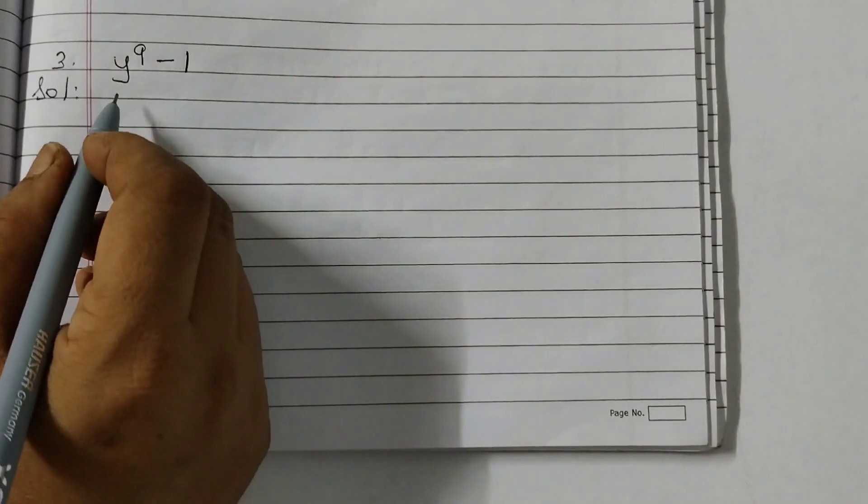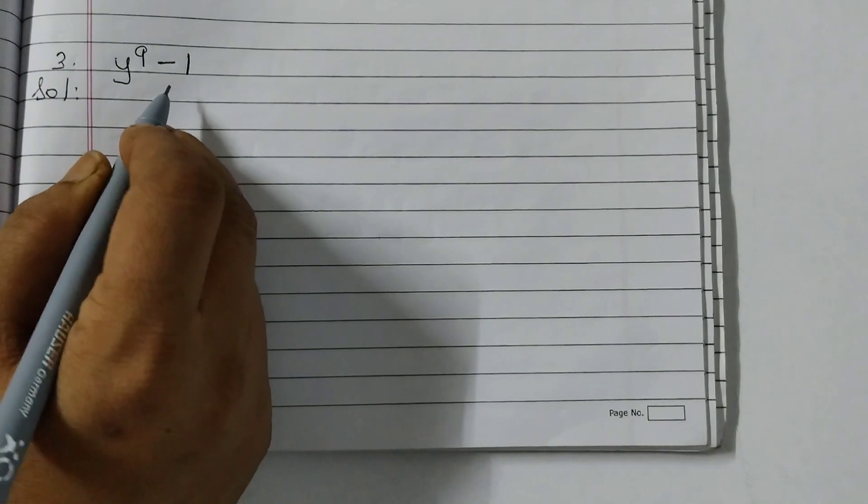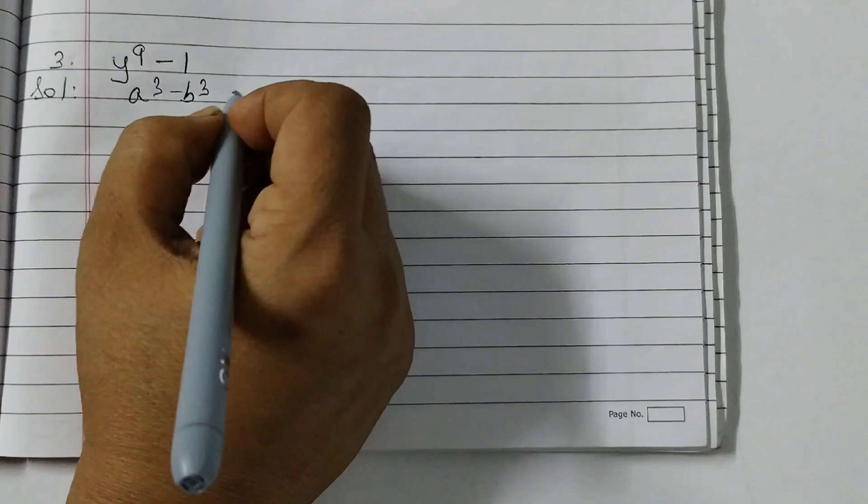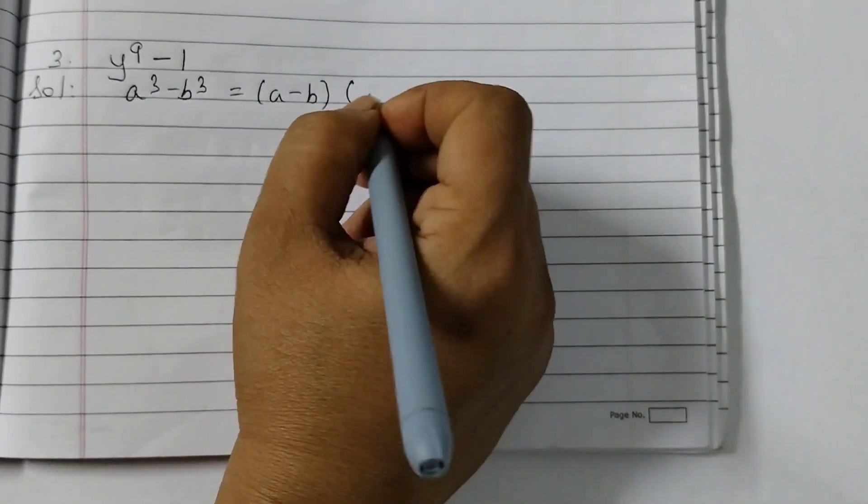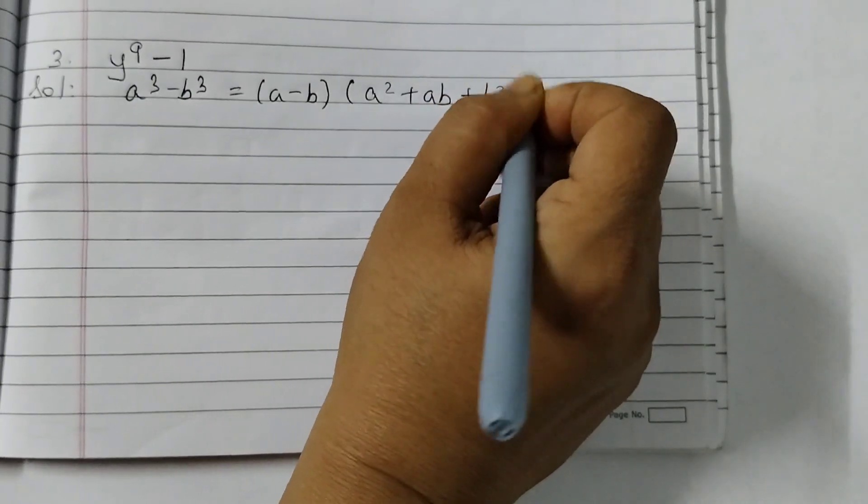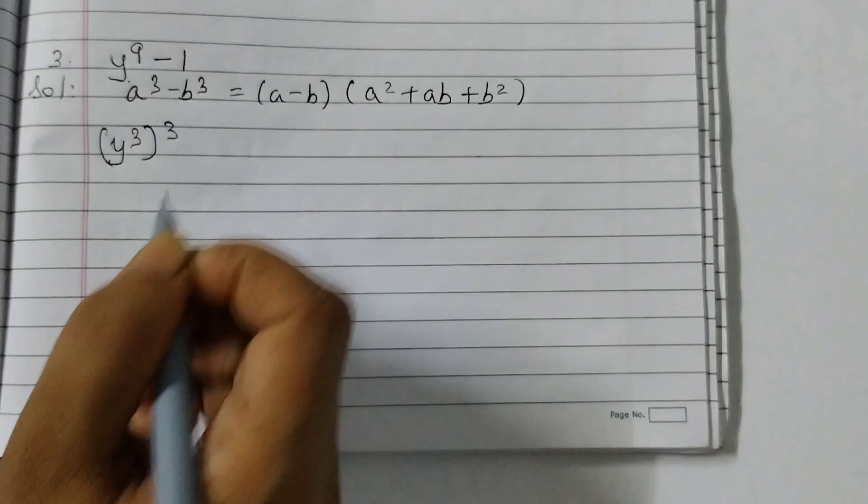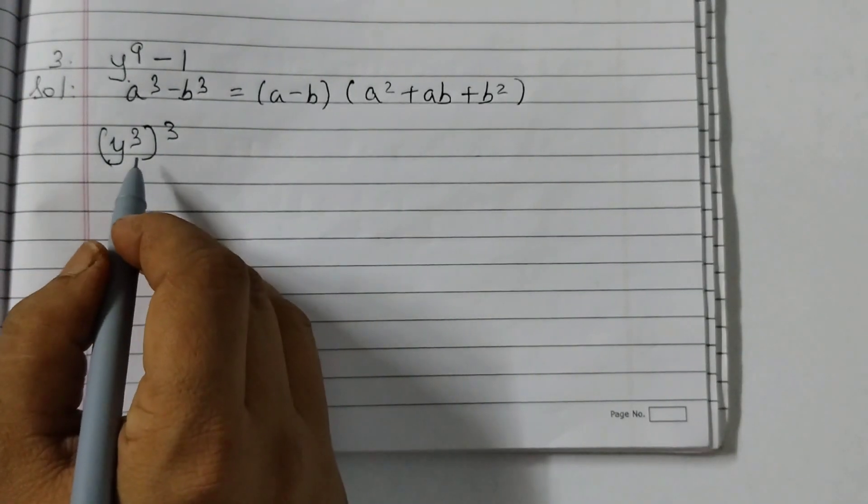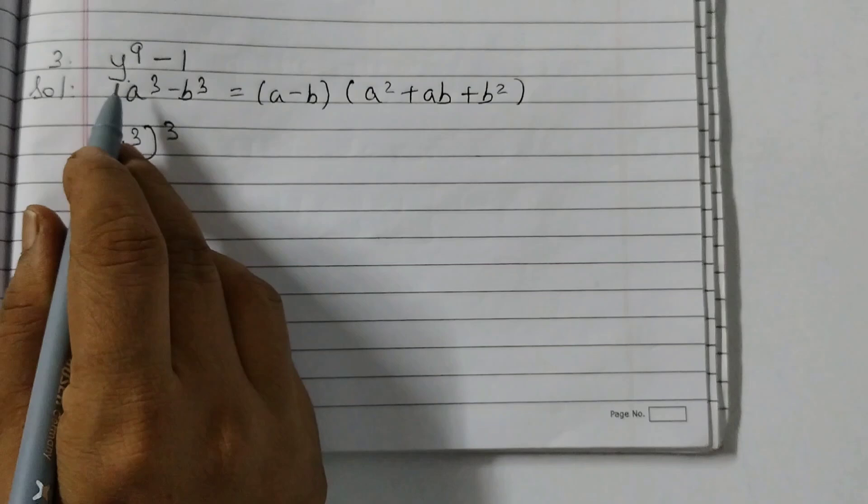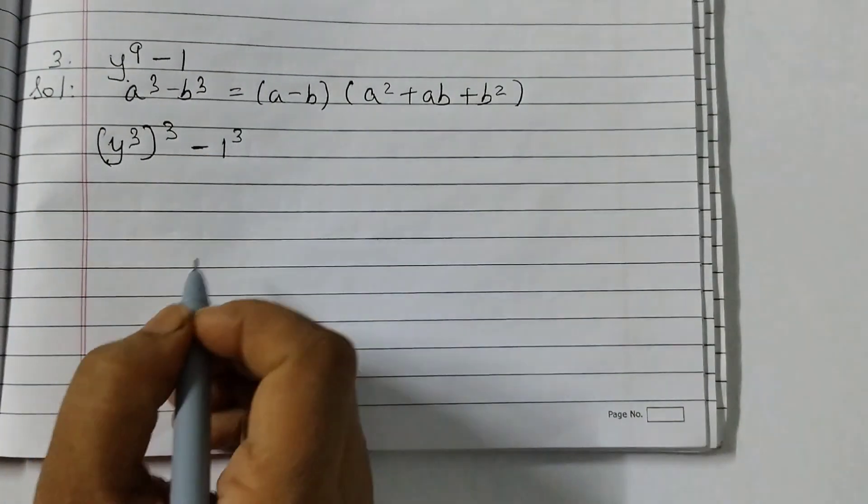Next one is Y to the power 9 minus 1. We need to write this as difference of cubes and use the formula A cubed minus B cubed which is A minus B into A squared plus AB plus B squared. This can be written as Y to the power 3 to the power 3, that's the exponent rule, power of a power. 3 into 3 is 9, so Y to the power 9 can be written like this minus 1 we can write as 1 cubed.